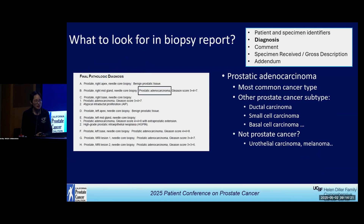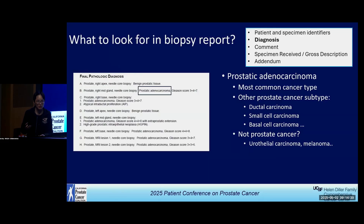For cancer, the most common prostate cancer is prostatic adenocarcinoma. There are some other rare subtypes including ductal carcinoma, small cell neuroendocrine carcinoma, basal cell carcinoma, et cetera. And sometimes, unfortunately, other cancers can spread into the prostate, like melanoma, bladder cancer, or urothelial carcinoma. Different flavors of cancer are important because they impact treatment decision and management plan.